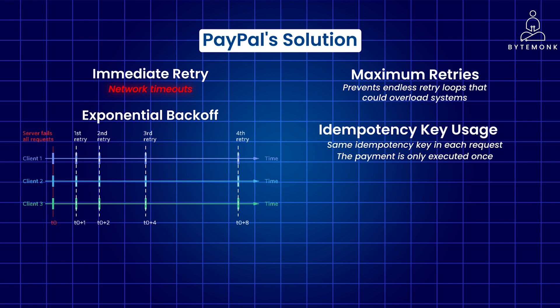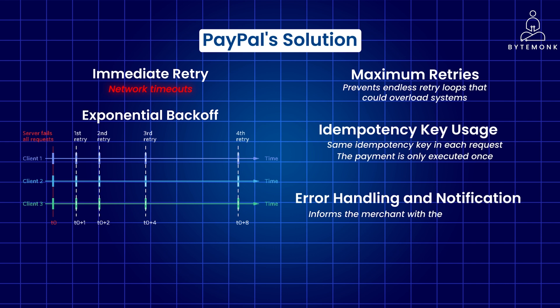If a retry encounters a duplicate key error, PayPal knows the original payment was already successful and can simply return the previous result to the client. PayPal also carefully handles errors during retries. If a payment ultimately fails after multiple attempts, it informs the merchant with the appropriate error code and message. The merchant can then decide how to proceed — for example, notifying the customer or trying a different payment method.